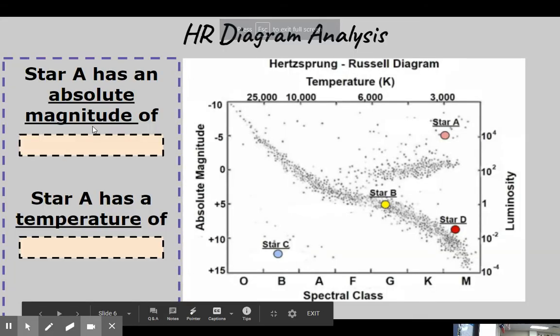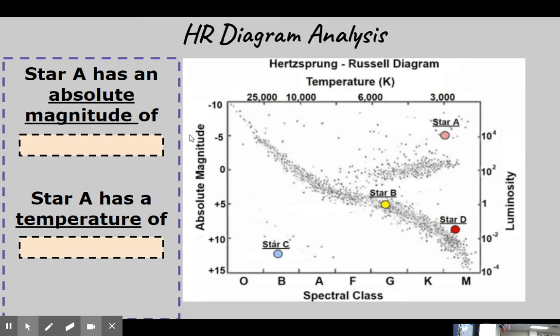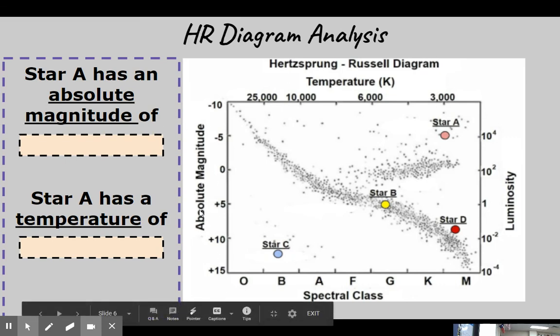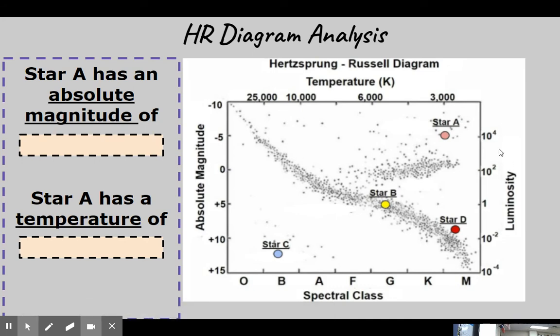Star A has an absolute magnitude of, so here's my title on the y-axis, absolute magnitude. So star A. So here's star A, and I kind of want to drag it across to see what its absolute magnitude would be. So it looks like my absolute magnitude is increasing in number as I go up. So I would say star A has an absolute magnitude of negative five or negative six. Star A has a temperature of, so here's your temperature. So what you want to look for is star A, and what temperature is it at? It's at 3000 Kelvins.